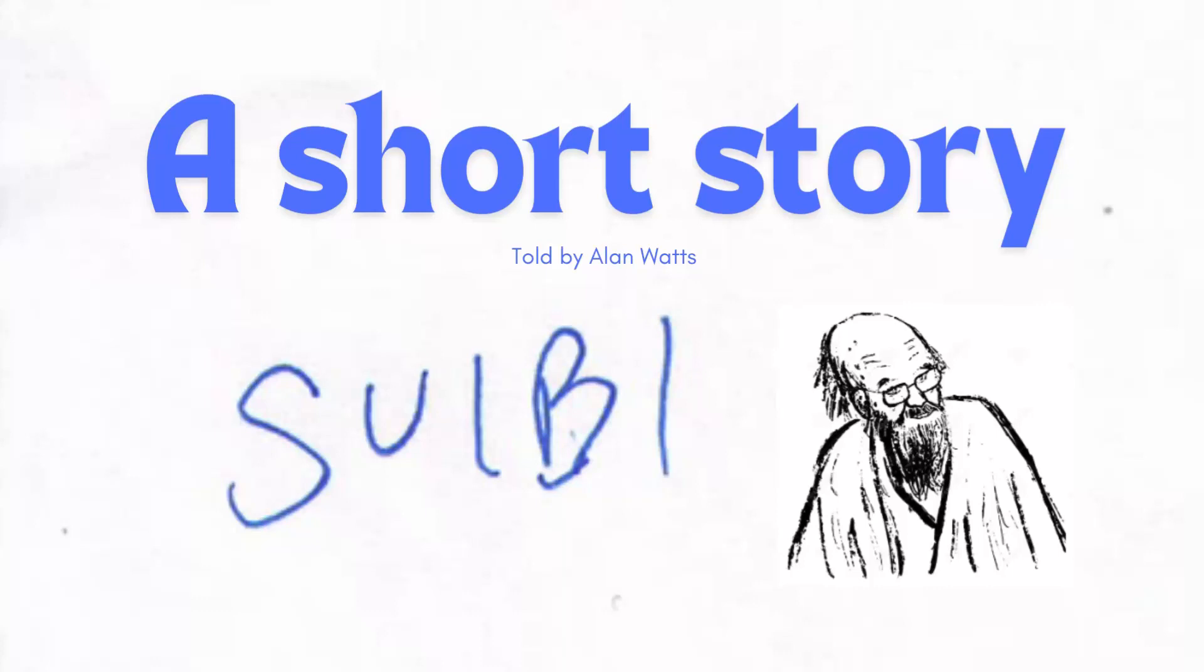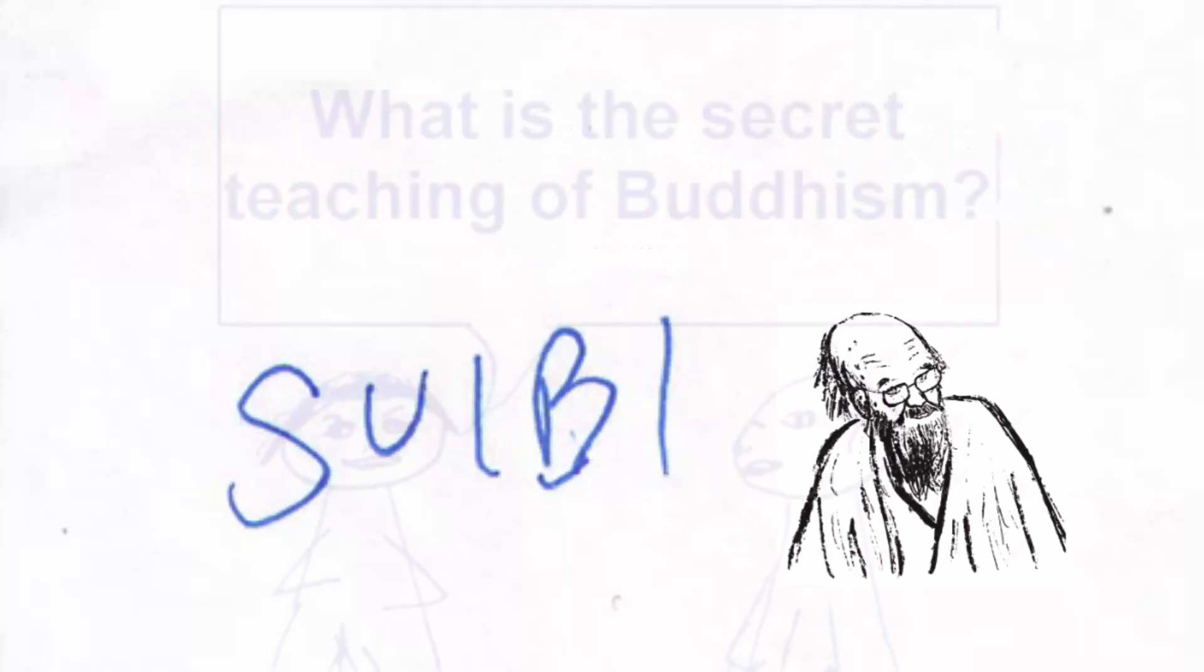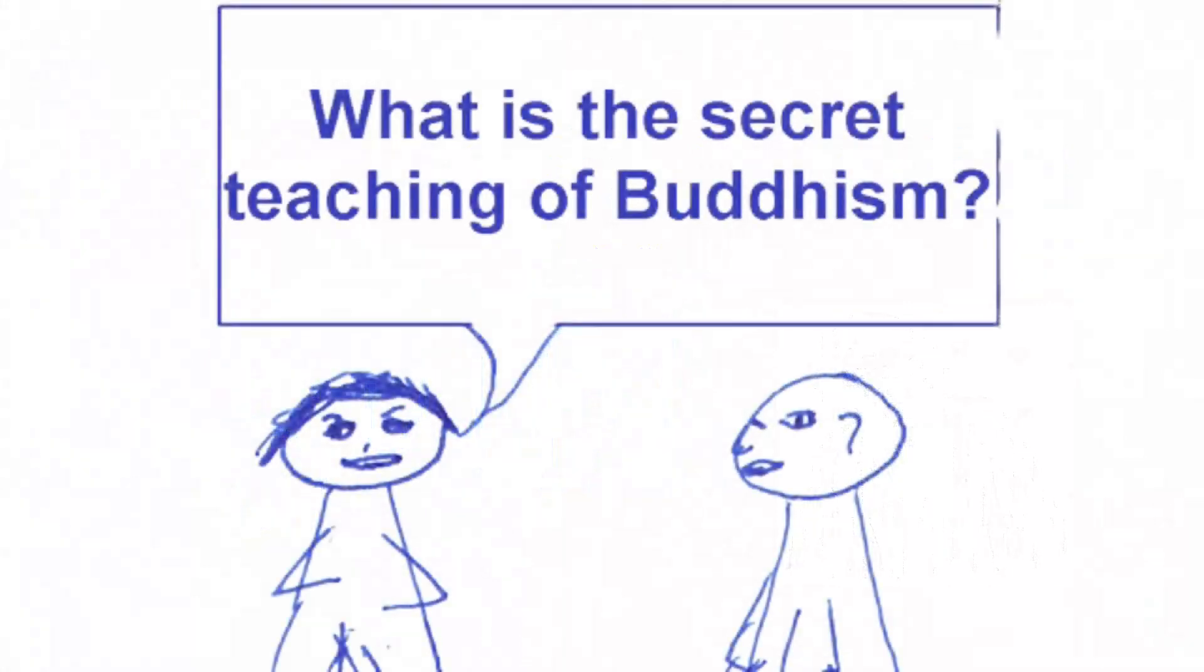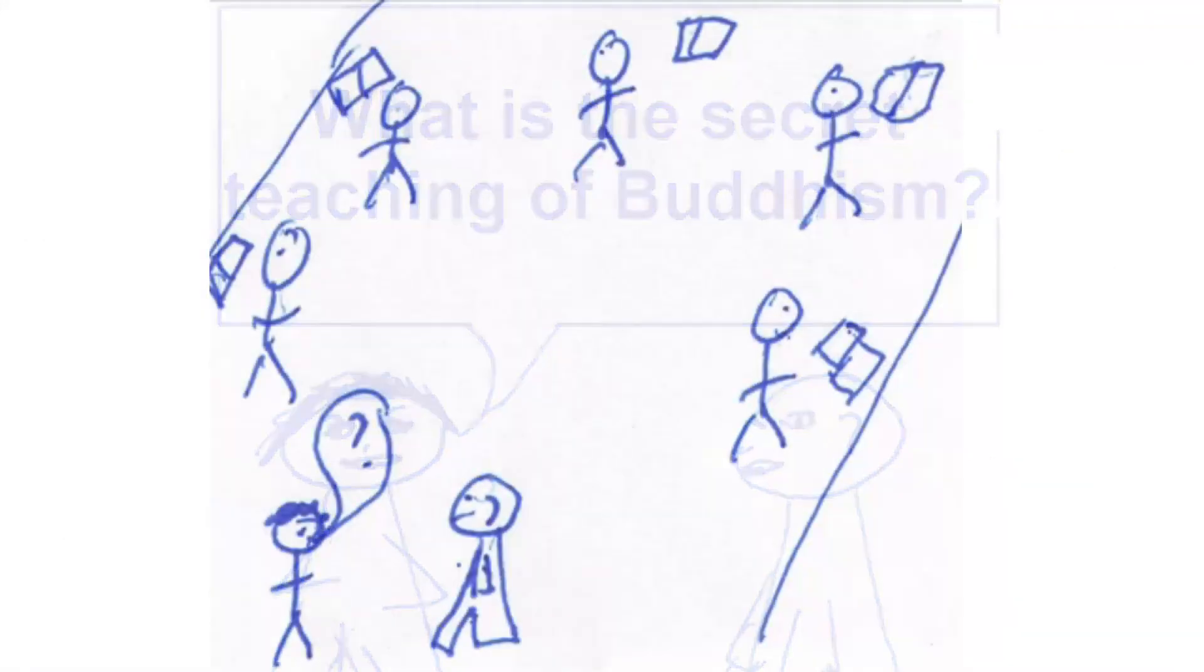There was a famous master called Suibi, and he was asked, what is the secret teaching of Buddhism? And he was asked this in the lecture hall where other monks were studying.